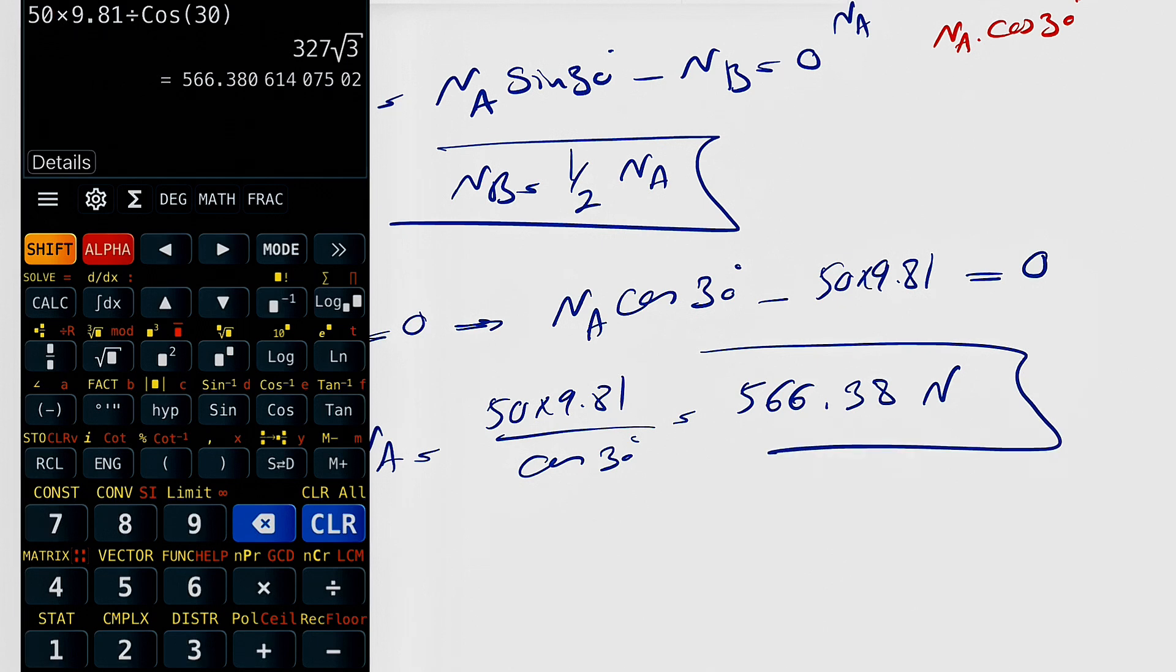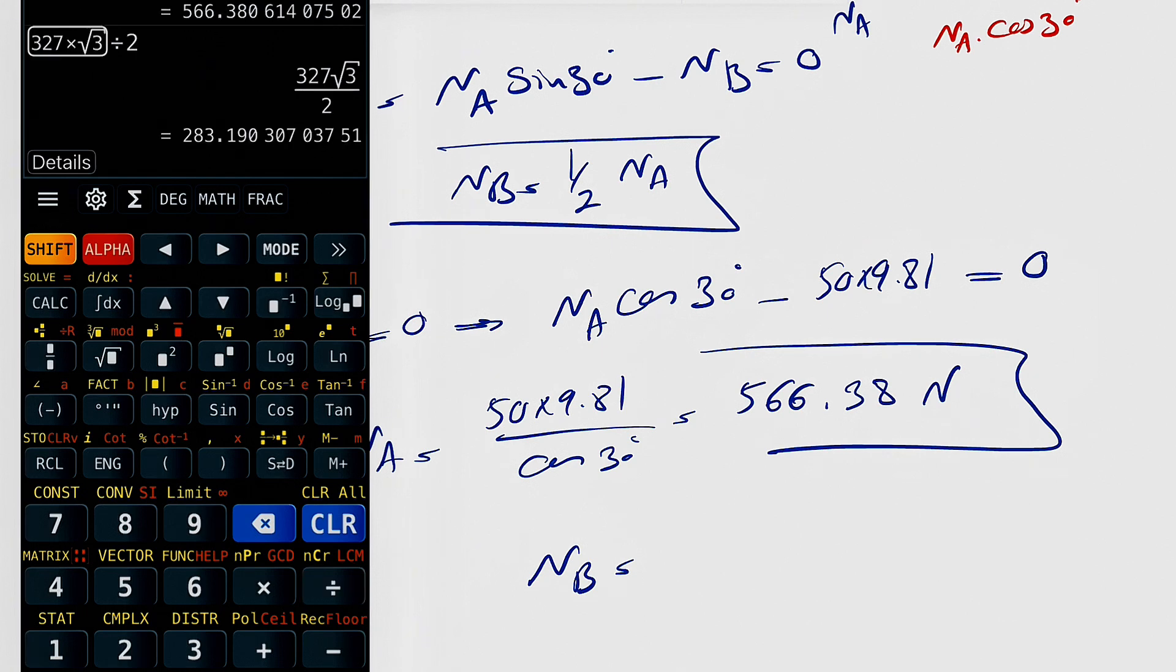And we know NB would be one half of that, so we just have to divide this by two. NB is going to be 283.19 Newtons, and that's the final answer for this question.